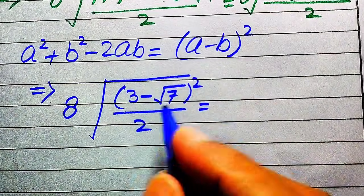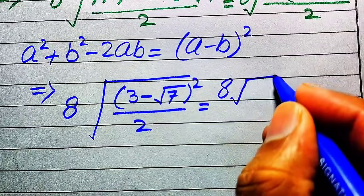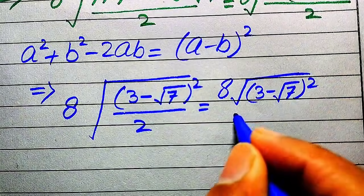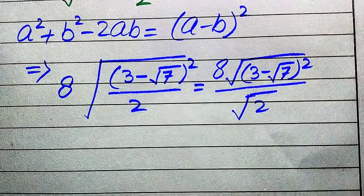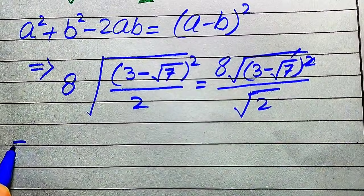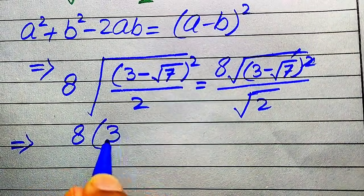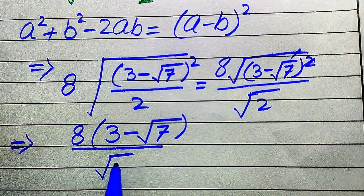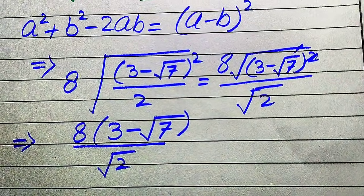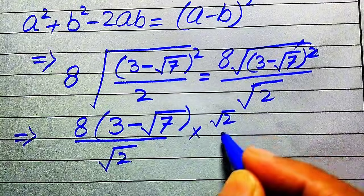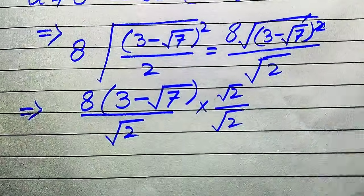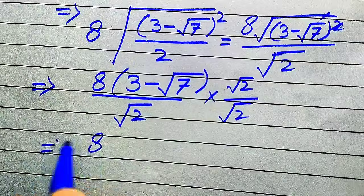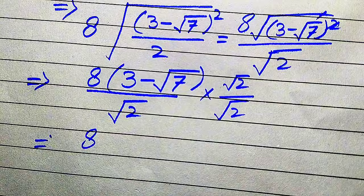We apply the square root separately: 8 times square root of (3 minus square root of 7) squared, divided by square root of 2. The square and square root cancel, leaving 8 times (3 minus square root of 7) divided by square root of 2. To write the answer in simplified form, we multiply and divide by square root of 2.